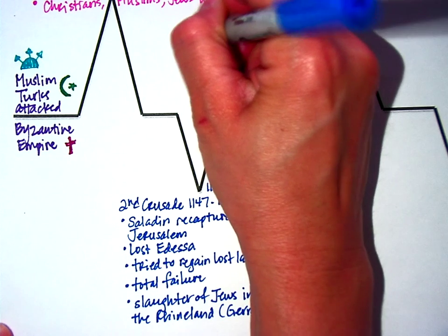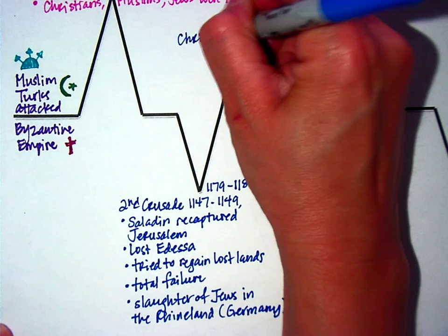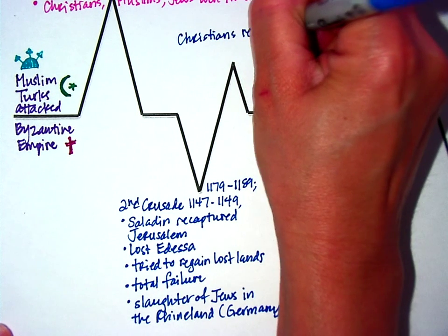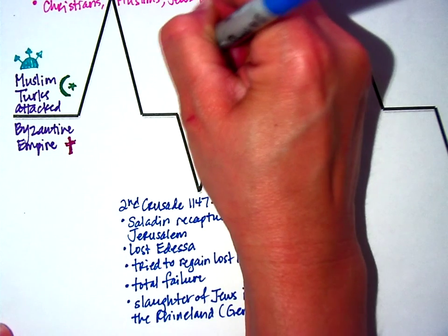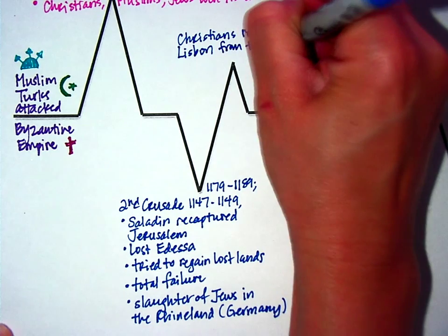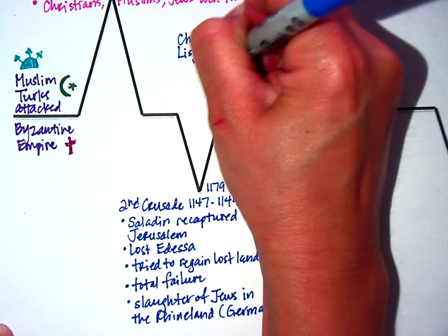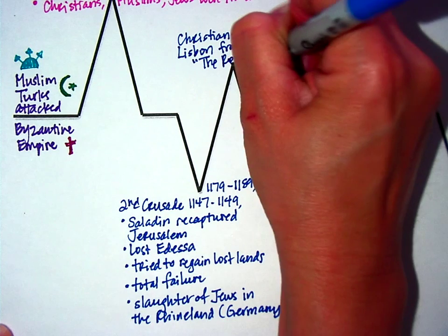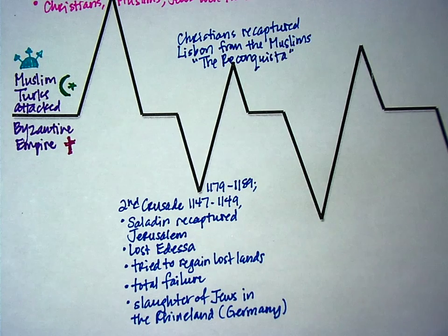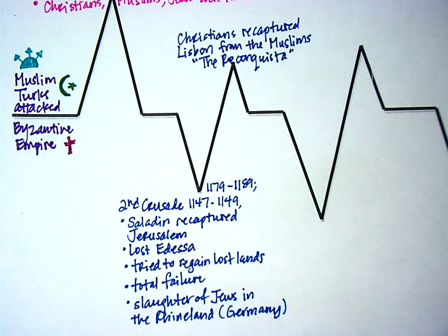There was one small victory during the Second Crusade: the Christians recaptured Lisbon, which is on the Spanish Peninsula, from the Muslims. This was called the Reconquista, which is Spanish for 'reconquering.' So the Christians gained a little land on the Spanish Peninsula, which is technically part of the European continent, but they lost Jerusalem and Edessa — which is why the Second Crusade is considered a failure.